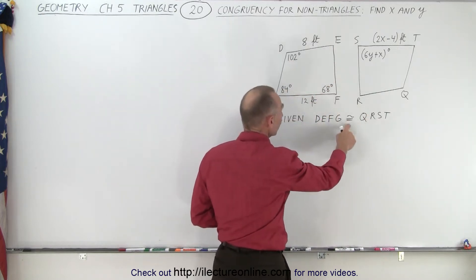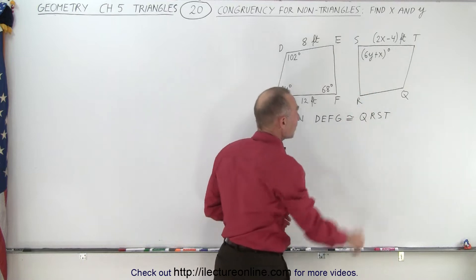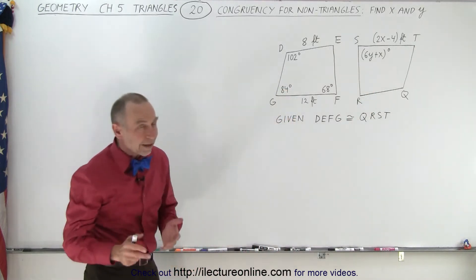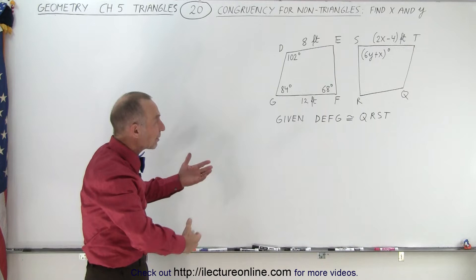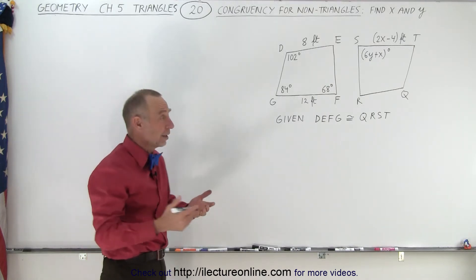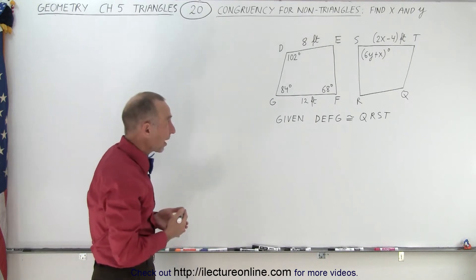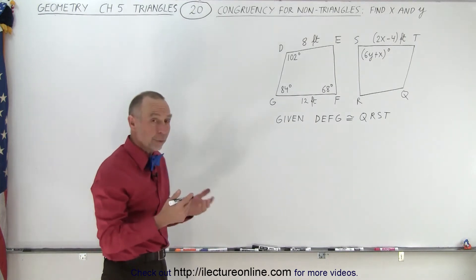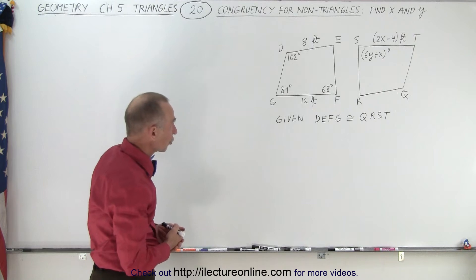D, E, F, G is congruent to Q, R, S, T. Now they're asking us to find X and Y. So we need to find corresponding sides. If they are congruent, that means that all four corresponding sides have equal length, and all four corresponding angles have an equal angular measure.